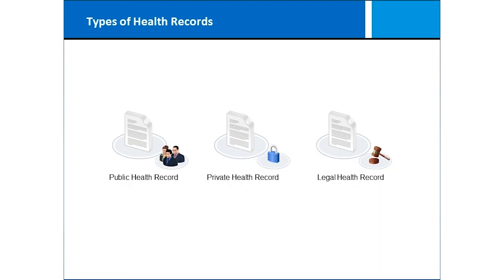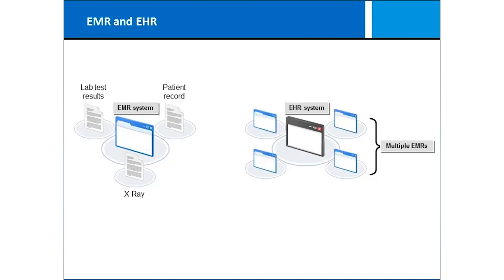We have various types of health records. Public health records are those that public health organizations have authority to obtain and use PHI, though they cannot necessarily disclose it. Private health records are yours and not for public consumption. Legal health records are documentation that a healthcare organization would provide if an official record was requested. The government has exercised authority over much of our healthcare data, and we have to expect it could go to government elements, insurance carriers, and ourselves.